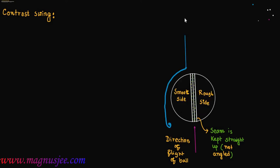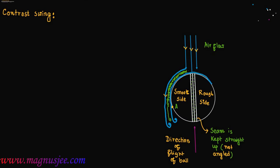Air is flowing in the opposite direction and we can denote the boundary layer touching the smooth side. Point A is the point of separation from which air flows touching the smooth side of the cricket ball. Air is flowing in the opposite direction and there will be turbulent flow. The boundary layer touching the smooth surface will be in a turbulent state, and on the other side, air will be flowing touching the rough side, maintaining turbulent flow again. Point B is the point of separation from which the weak turbulent boundary layer is separated from the ball.